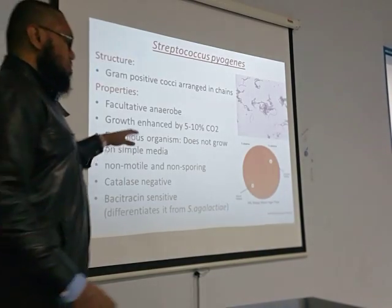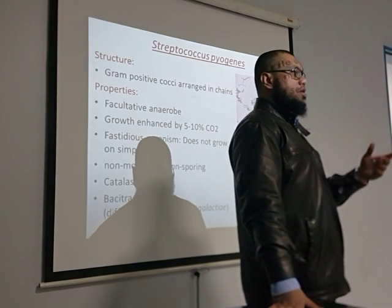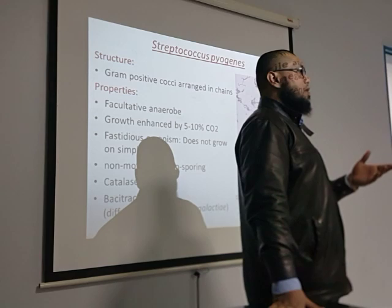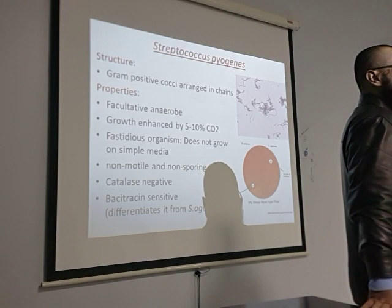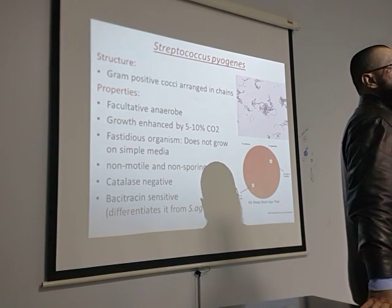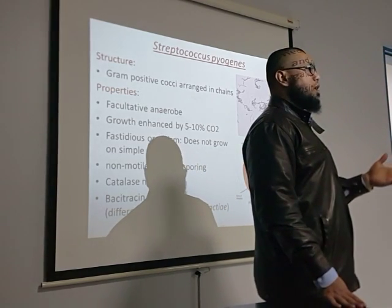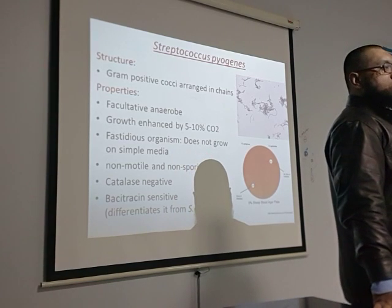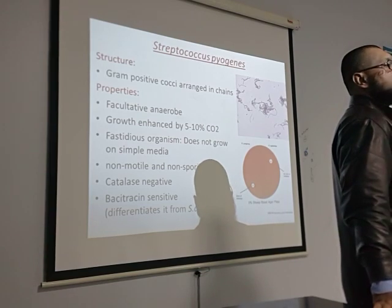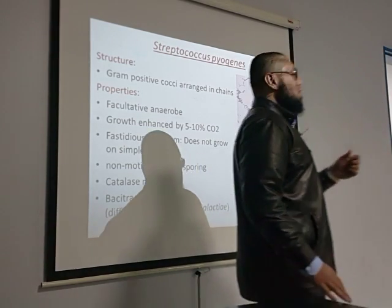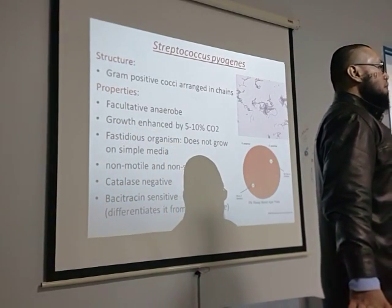Streptococcus pyogenes is basically present in the throat and upper respiratory tract, primarily causing respiratory infections. After the respiratory infection it can enter the bloodstream and reach the heart to cause endocarditis. Its structure is gram-positive cocci arranged in chains, and the bacteria is fastidious — it has special growth requirements.